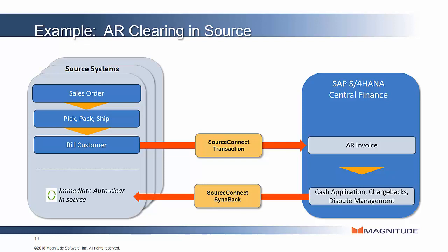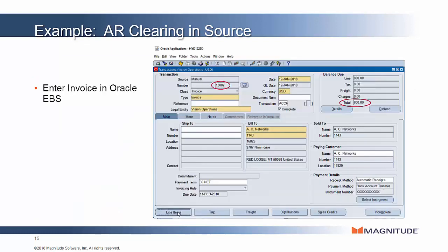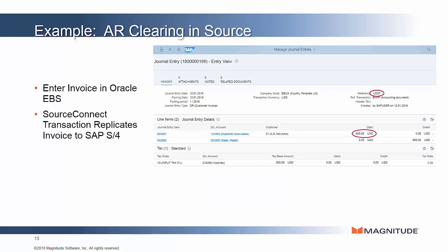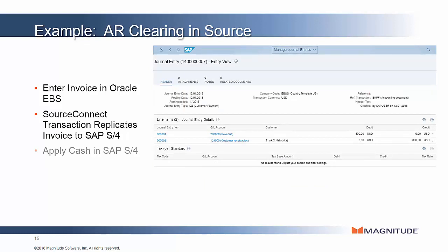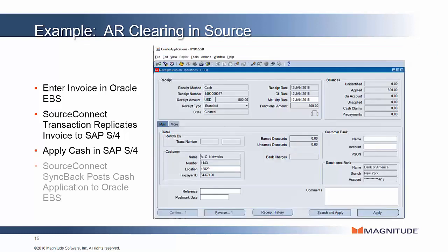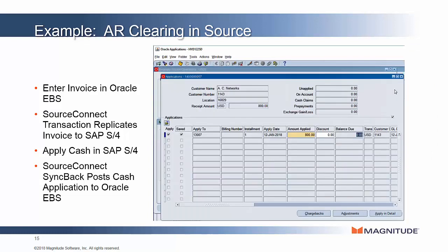Again with an Oracle eBusinessSuite example — you see that customer invoice in Oracle, you see SourceConnect Transaction replicating that customer invoice into Central Finance as a customer invoice document type, and then you see the cash application in Central Finance against that invoice. Then SourceConnect Syncback takes that cash application and replicates it back into the source system. Just like vendor balances, this will keep the customer balances in sync and help close out those source transactions on the AR side.